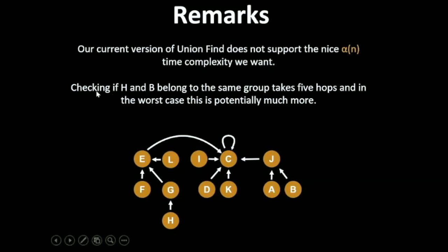This is the problem if you don't use path compression. It says here that if we are checking if H and B belong to the same group, it takes five hops. And in the worst case, this is potentially much more. So there is something called path compression which will reduce your find operation complexity to constant time. In this case, if you are trying to find whether H and B belong to the same group or not, from H you have to have four steps and from B you have to have two steps. So this is increasing your time complexity. From H you will go to G, E and C and from B you will go to G and C. Then you will say that they belong to the same group.